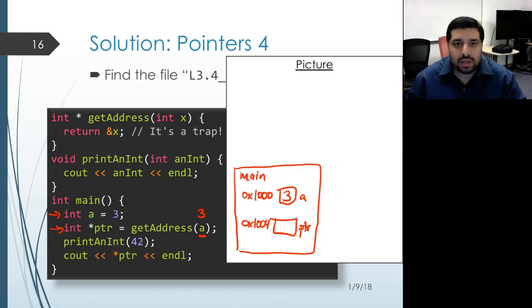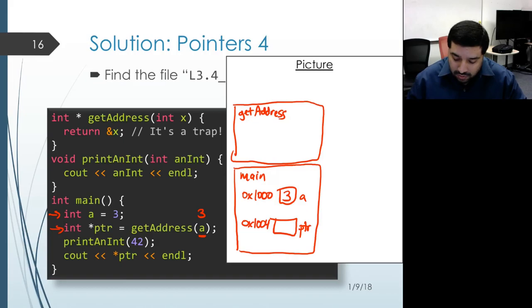Then we get an activation record for that function call. And in most implementations, we have a stack structure to store activation records. So that activation record gets placed at the top of the stack. And within the activation record for getAddress, we have the space for our parameter X. So let's assume that it gets placed at address 1000C.